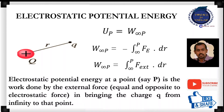The negative sign indicates that here the displacement will be in a direction opposite to that of the electrostatic force. So this amount of work done will be stored in the form of its potential energy at that given point.